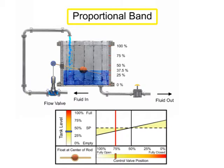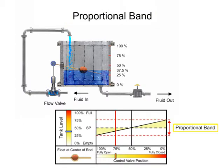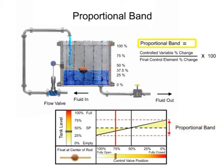Proportional band is defined as the percentage of change in the controlled variable which causes the final control element to go through 100% of operating range. Proportional band is calculated by dividing the controlled variable percent change by the final control element percent change multiplied by 100.